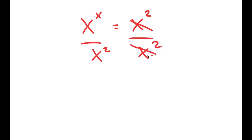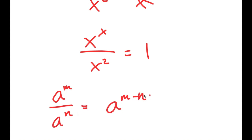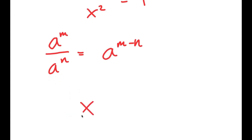These two cancel out, and I get x to the power of x over x to the power of 2 is equal to 1. Now, if I have something in the form a to the power of m over a to the power of n, this is equal to a to the power of m minus n. So I get x to the power of x minus 2 is equal to 1.